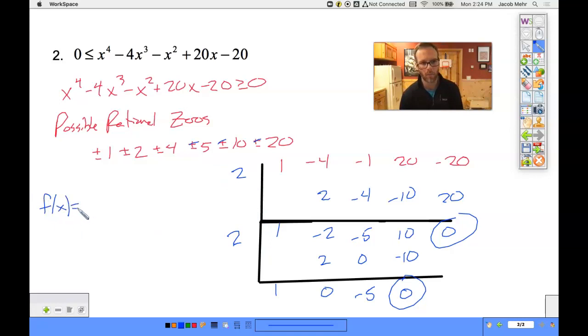So where are we at right now? We have x minus 2 as a factor repeated twice. And what's left? Remainder, constant, x, x squared. We have x squared minus 5.